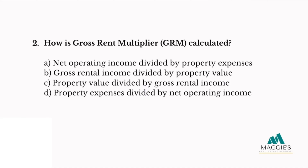Question two: How is gross rent multiplier, GRM, calculated? A. Net operating income divided by property expenses. B. Gross rental income divided by property value. C. Property value divided by gross rental income. Or D. Property expenses divided by net operating income. The correct answer for number two is C — property value divided by gross rental income.